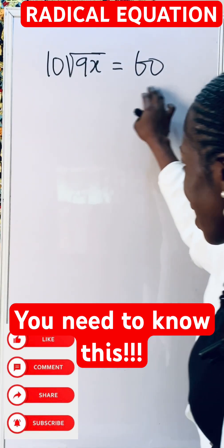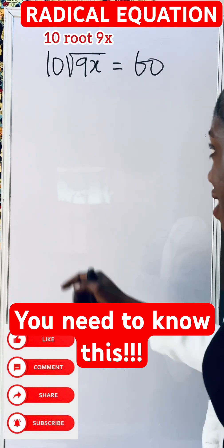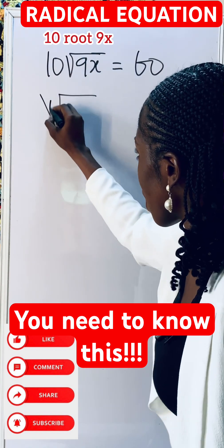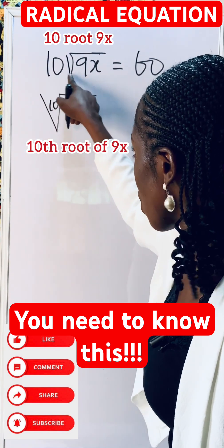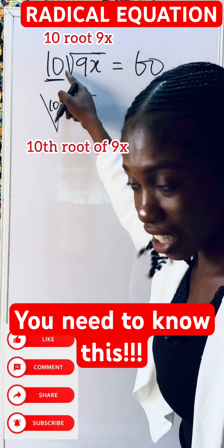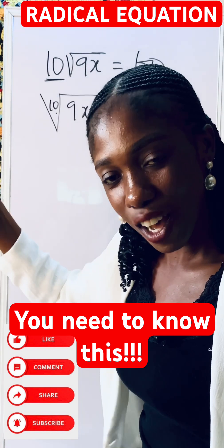Come and let me teach you how to solve this. This is read as 10 root 9x equals 60. Please know that these two are not the same: this one is 10th root, and this one is 10 root 9x. Here, this 10 is a coefficient; here, this 10 is an index. Watch our tutorial - the link I'll leave in the comments.